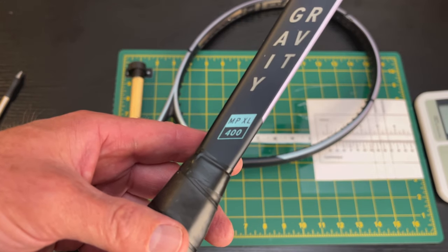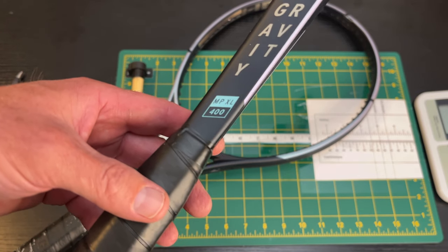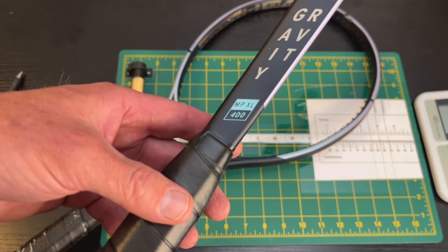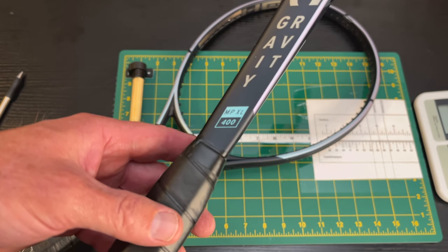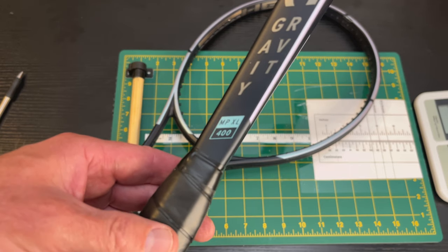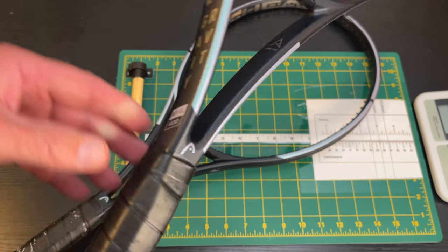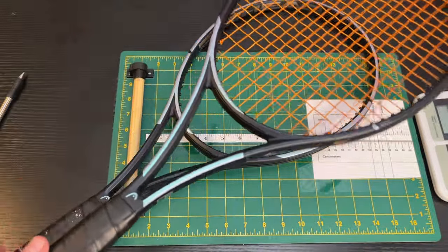This is the new Tennis Warehouse exclusive 27 and a half inch racket. I believe, my hunch is that Head is doing this exclusive with Tennis Warehouse to sort of test the market to see if there's much demand for an extended length racket. So kind of a surprise, unusual for Head to offer an extended length racket.